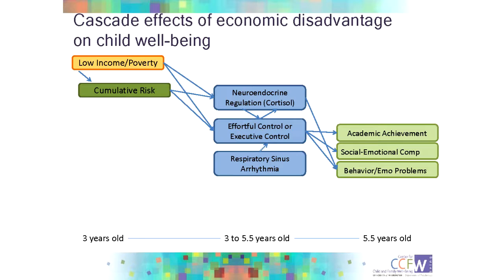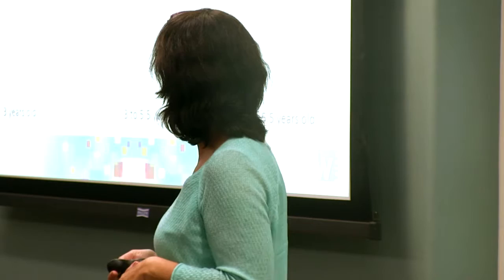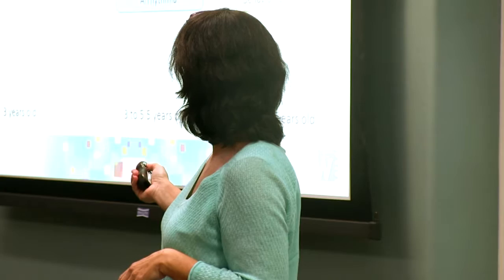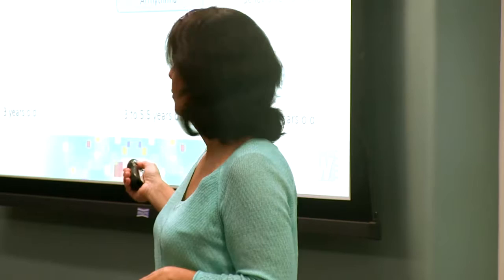To summarize across three or four studies: low income was related to higher cumulative risk; both were related to dysregulation of the HPA axis and to lower effortful or executive control; neither was related to RSA. These systems are interrelated and influencing each other over time, with each having implications for child outcomes. Cortisol dysregulation was related to more behavioral-emotional problems; executive control was related to all the outcomes we were looking at — behavior problems, academic readiness, and social-emotional competence. But what we were most interested in was the role parenting plays in mediating or moderating these effects.